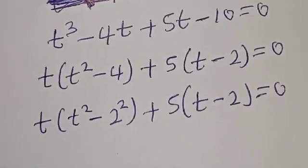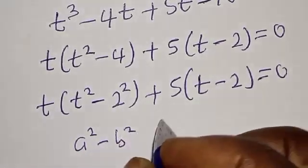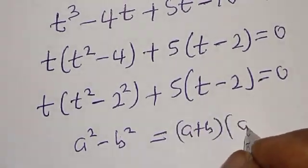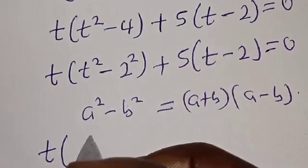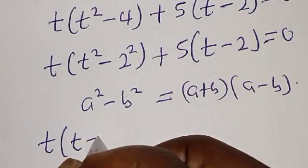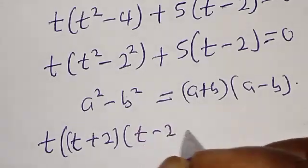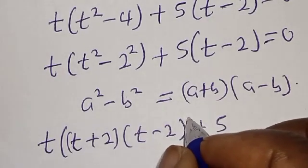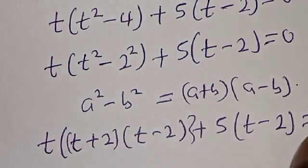Using the difference of squares identity, a squared minus b squared equals a plus b into a minus b, we have t into t plus 2 into t minus 2, plus 5 into t minus 2, is equal to 0.